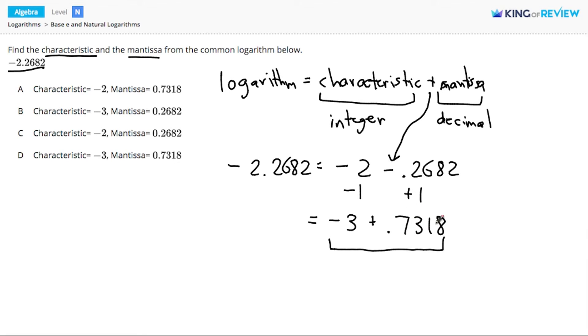So in this case, the characteristic is the integer part, negative 3, and the mantissa is the decimal part, 0.7318. Our answer is D. Thanks for watching.